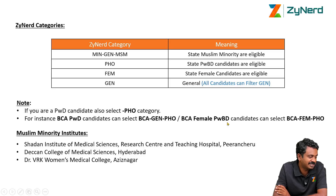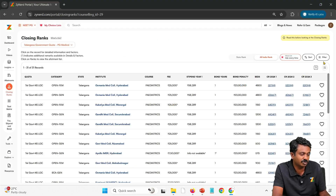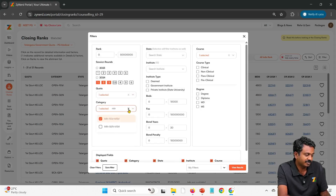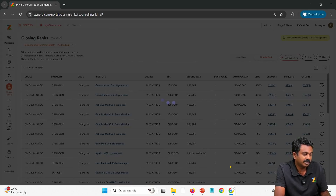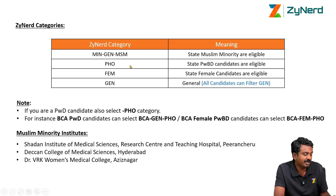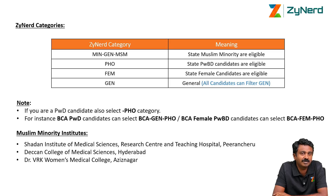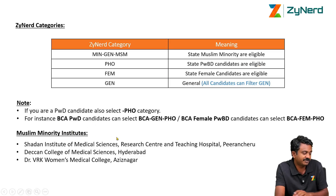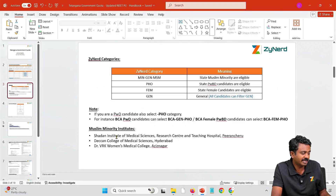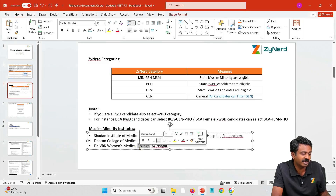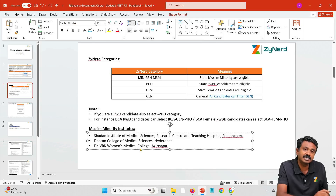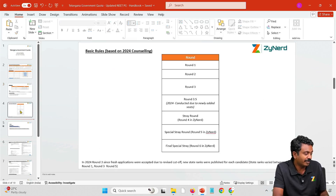The three Muslim minority institutes — Shadan, Deccan, and Dr. Vark — require you to filter on minority general Muslim. If you select minority gen Muslim, you will see only those seats available under these three institutes under the minority category. Note that minority gen Muslim candidate seats are available only for local candidates of Telangana — that is, those who have done MBBS from Telangana. Also remember that Dr. Vark is a Women's Medical College for MBBS, but it also provides seats for men in post-graduation.